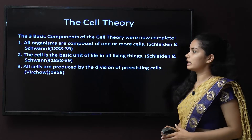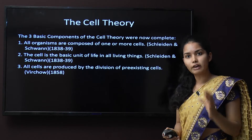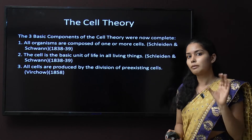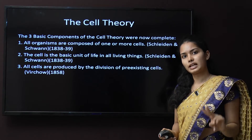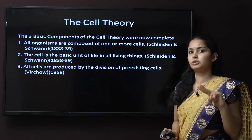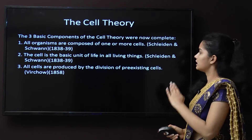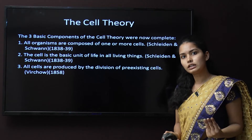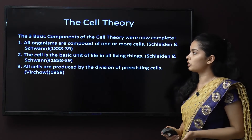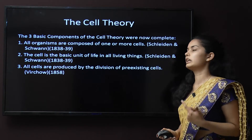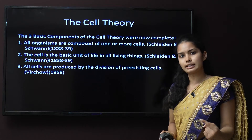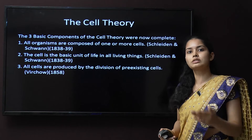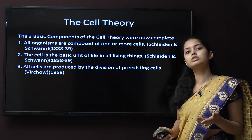The second rule is that the cell is the basic, fundamental, and structural unit of living things. All living things are made up of cells, and the cell is the basic structural and functional unit of the living organism. The third cell theory states that all cells are produced by the division of pre-existing cells — no cells are produced spontaneously.